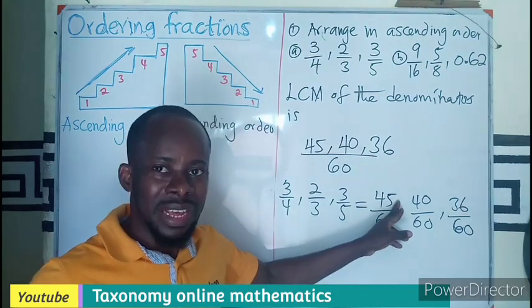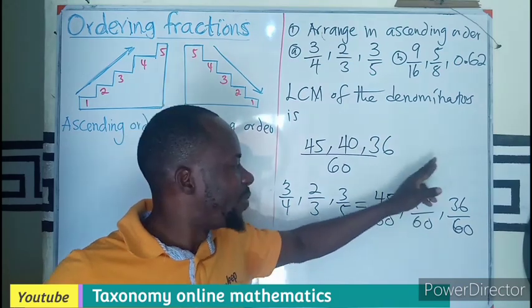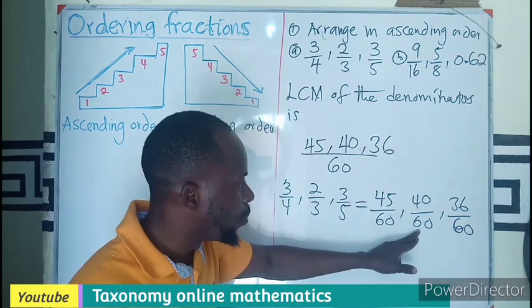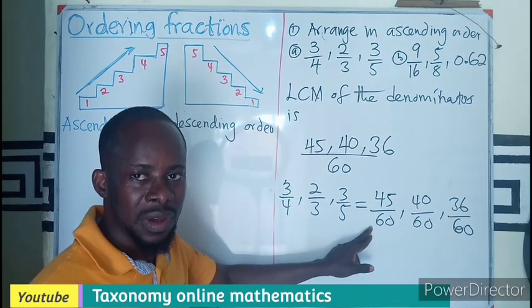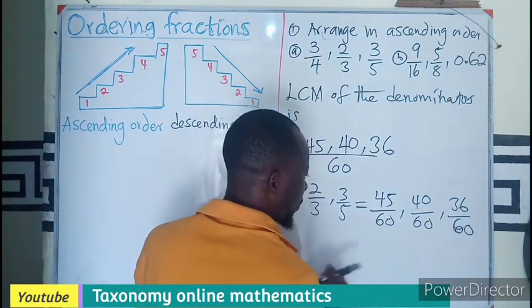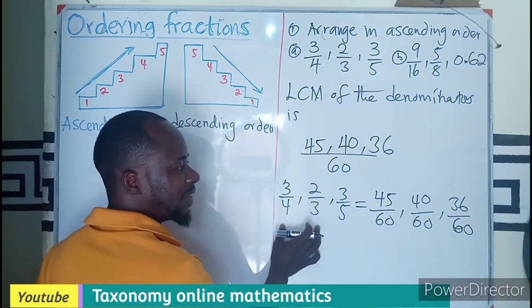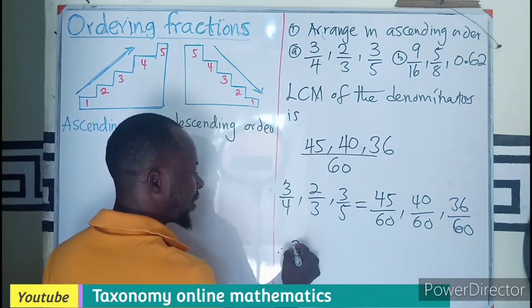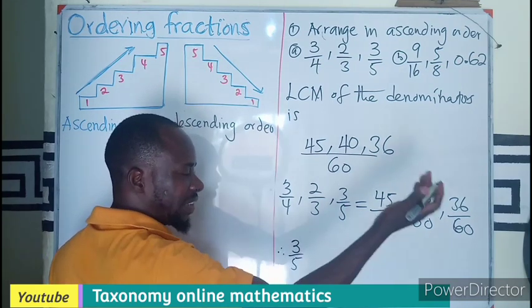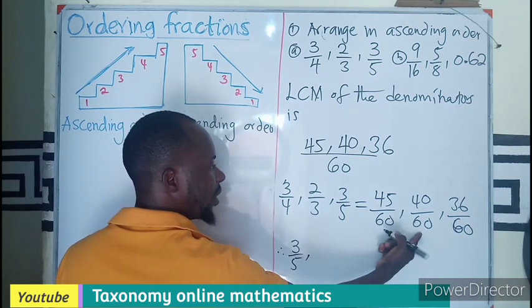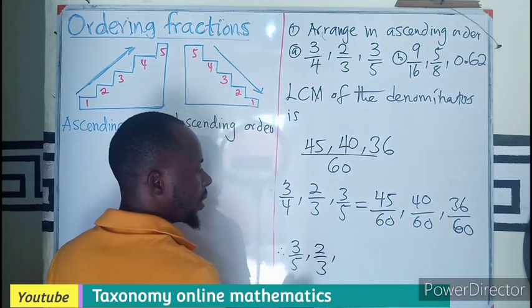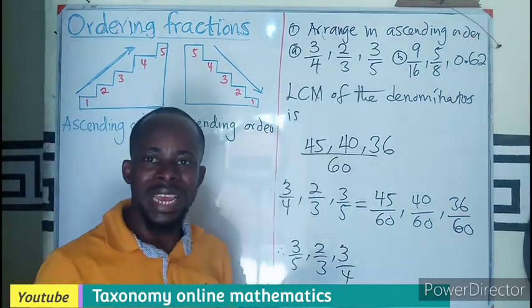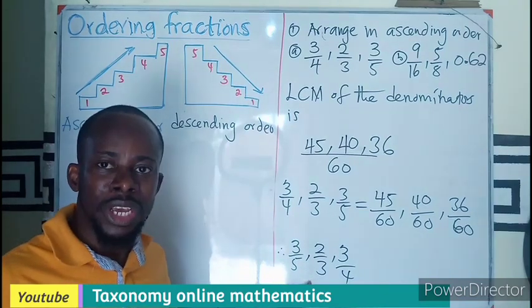You can see that this part is bigger than this, which is bigger than this. So in ascending order we will start from the smaller compared to this compared to this. Comparing this with this, we can see that 3 over 5 is the smallest one, followed by this which is 40 over 60, which is 2 over 3, then followed by 3 over 4. So if I am to arrange this fraction in ascending order my answer should be in this form.